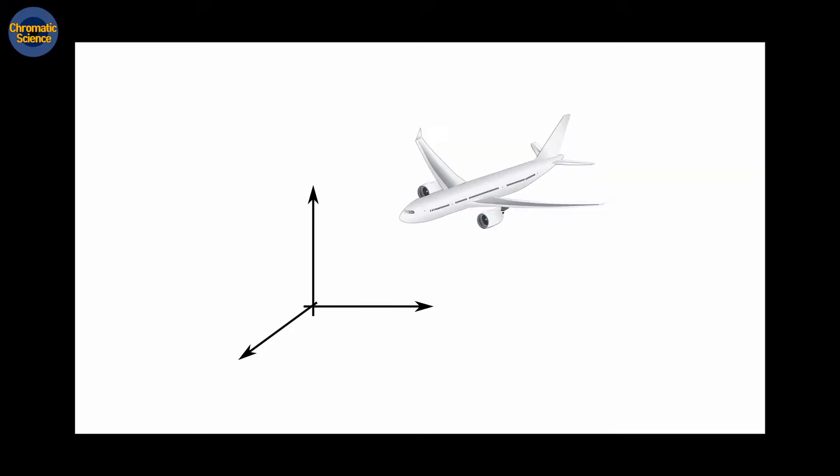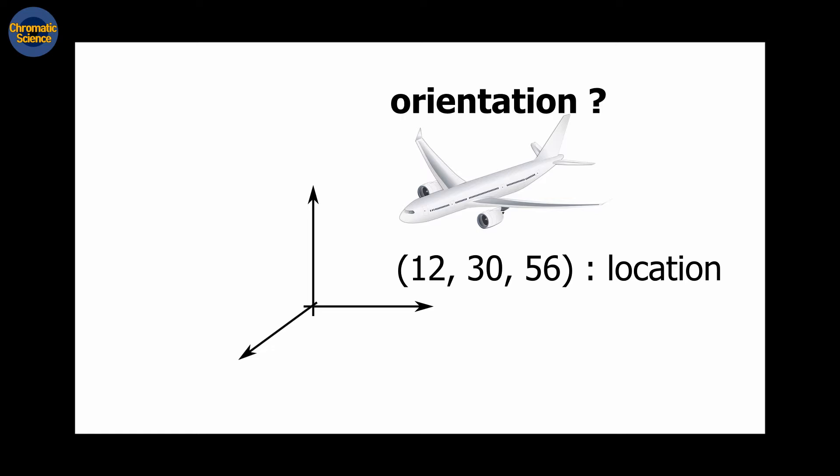Then, how many numbers do you need to express the location and orientation of an object in 3D space? First of all, we need three numbers for location. How many numbers should be used for orientation? To understand the orientation of an object in 3D space, let's use the head motion.